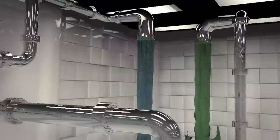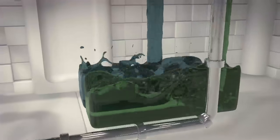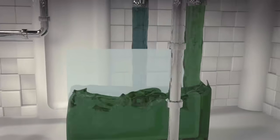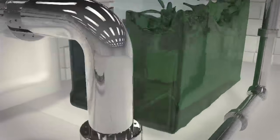Osmotic power stations recreate and harness this process by separating a tank of fresh water and a tank of saltwater with a semi-permeable membrane.